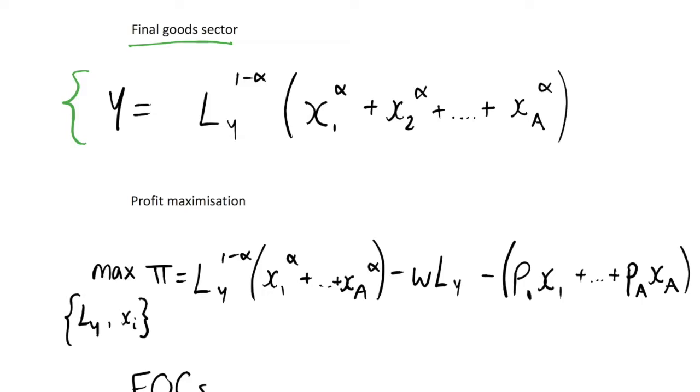And this production function looks a little bit different to the ones that we have been using in the past, like Cobb-Douglas production functions, because here we have as one of the inputs is going to be our labor, and notice that this is subscripted by Y.